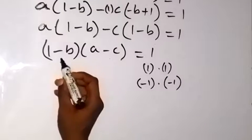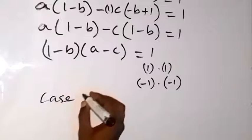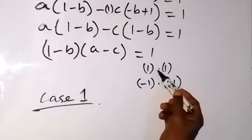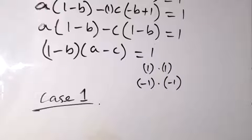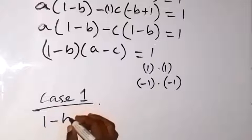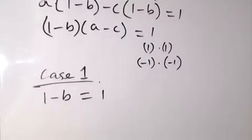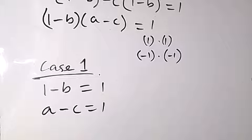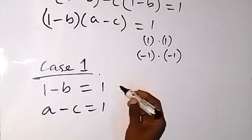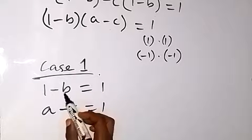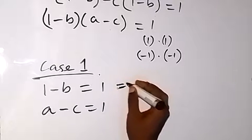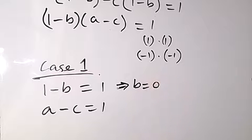For case 1, we have each of these factors equal to 1. So we can now say that 1 minus B equals to 1, and also A minus C equals to 1. From the first equation, taking minus B to one side implies that B equals to 0.